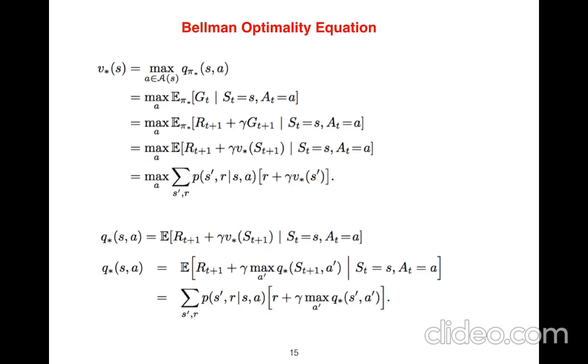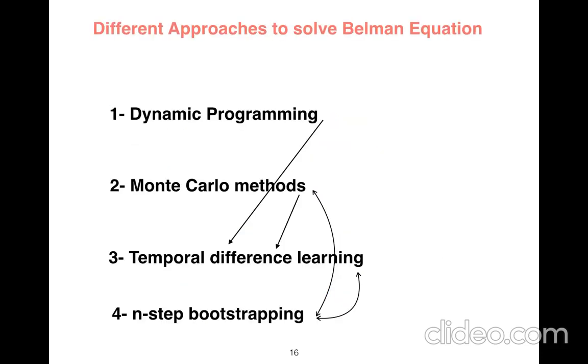So when you write the equations, you come up to Bellman optimality equation. There are four, or I said 1000 methods. I just write four methods out of hundreds of methods you could use to solve Bellman equation.